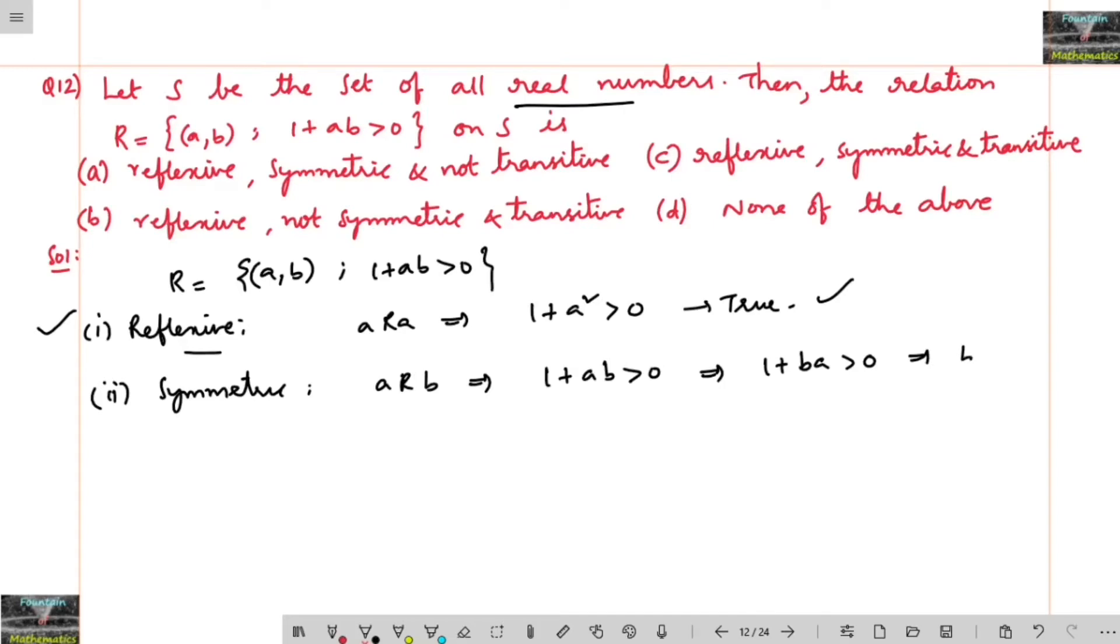So what is 1 plus ba? We can add b is related to a. And hence if a is related to b, we got b related to a, so it is symmetric.